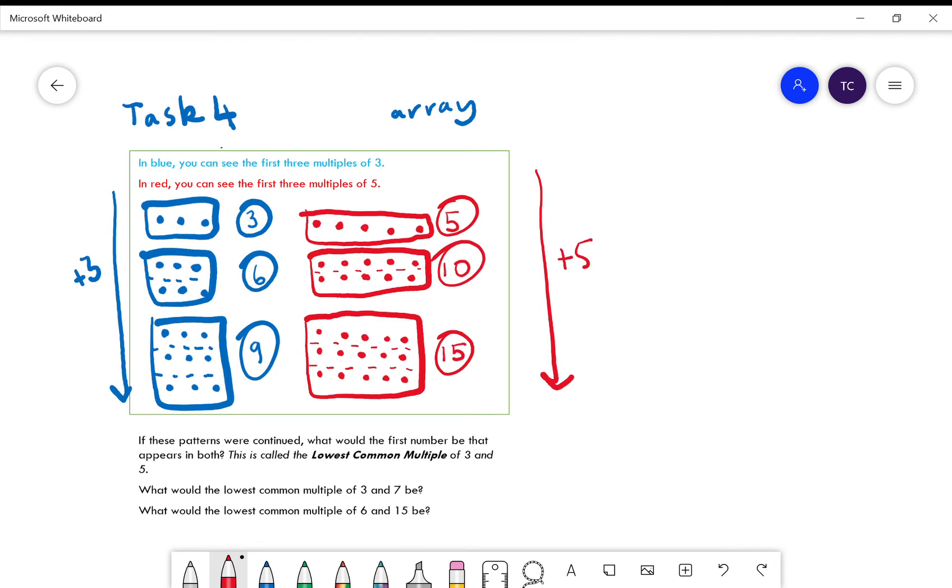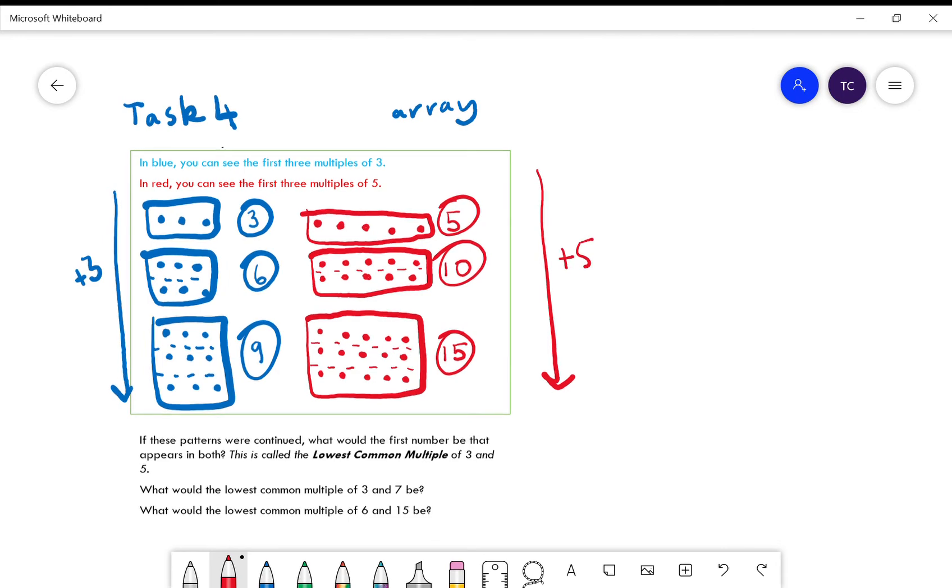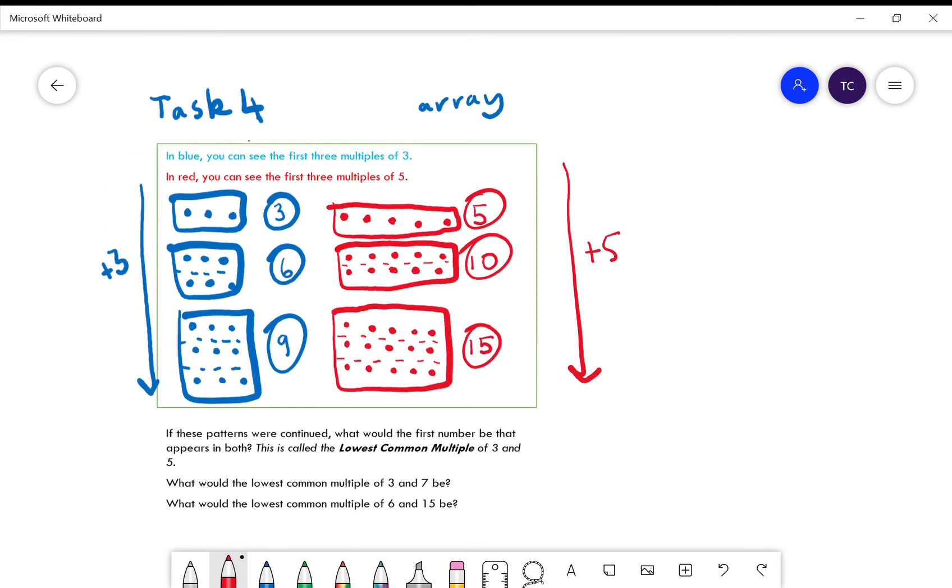And for your multiples of five, you're adding on an extra row of five every time. It's asking you if the patterns are continued, what would be the first number that appears in both of those.